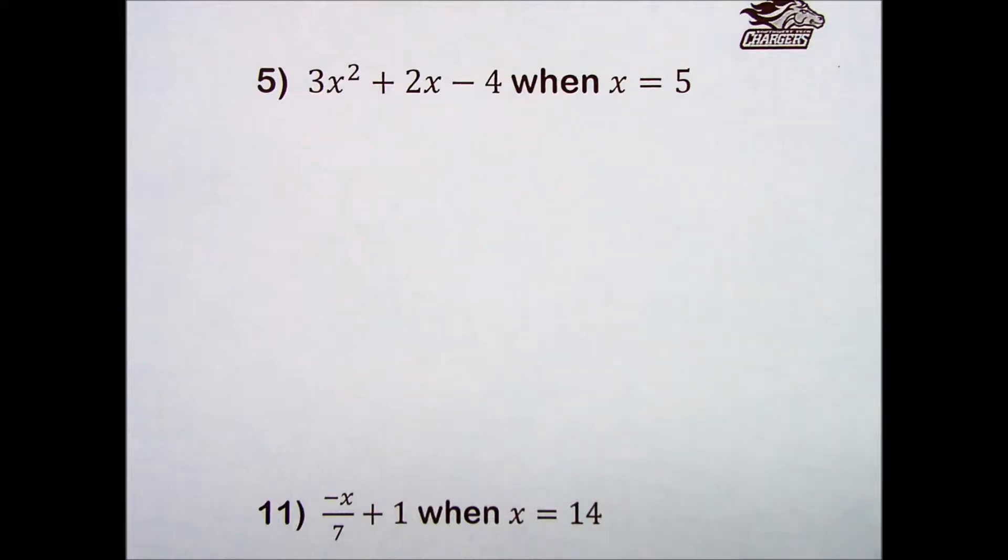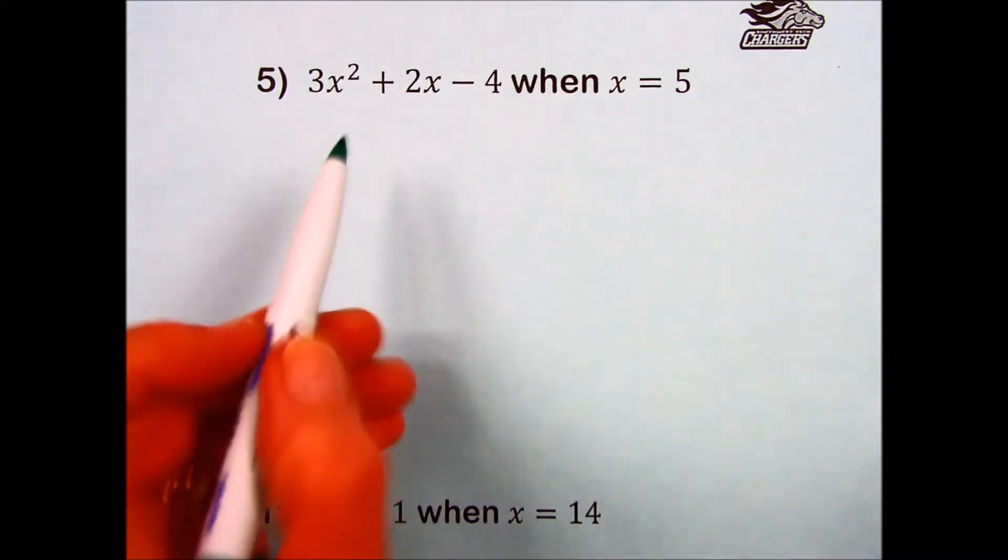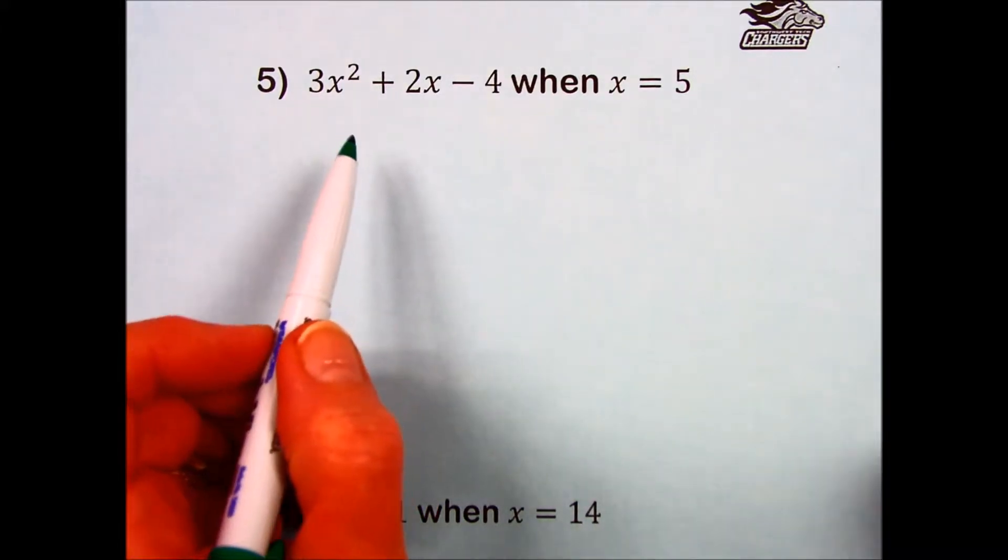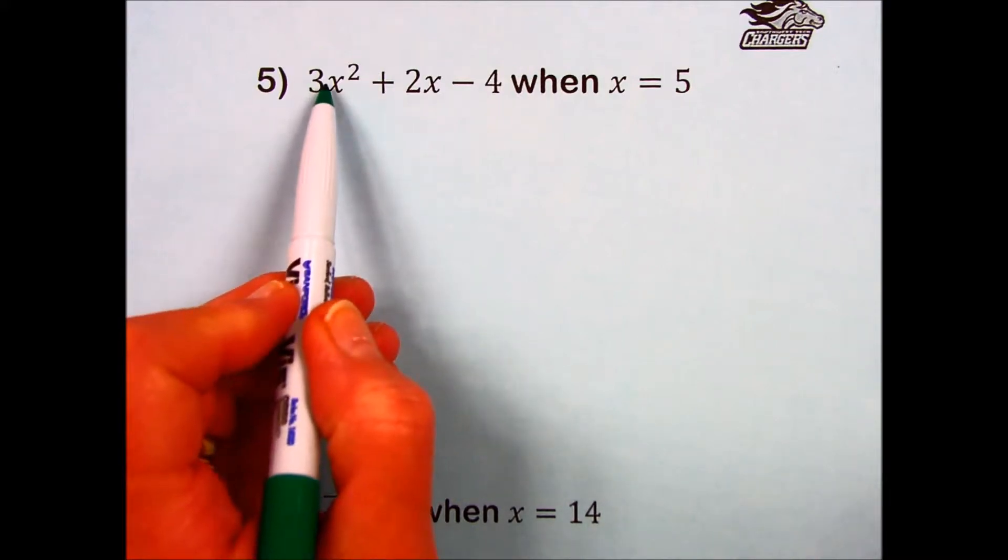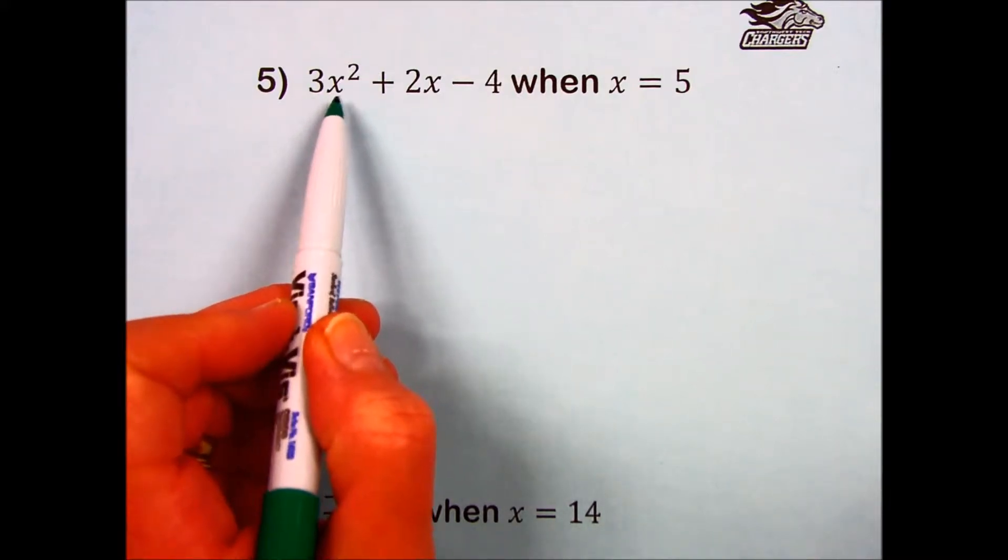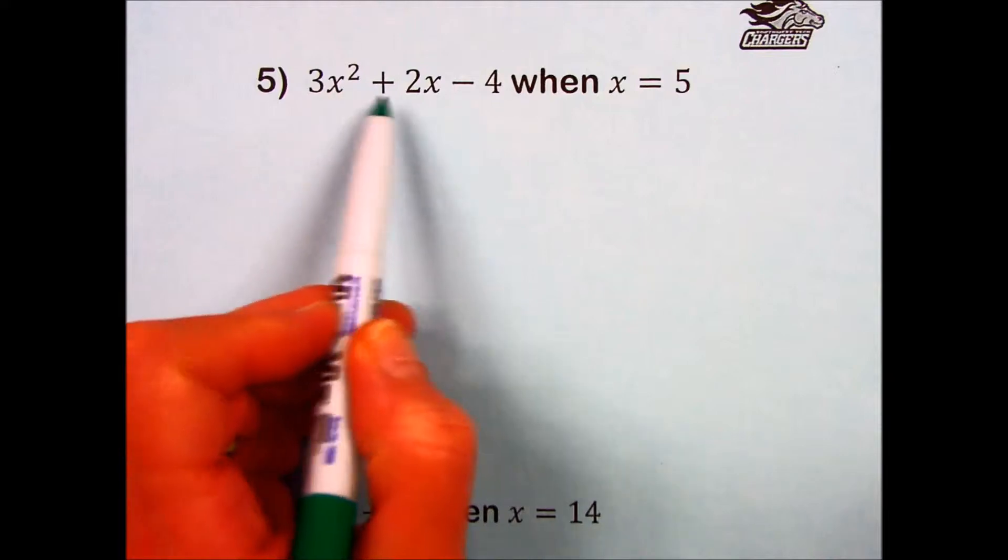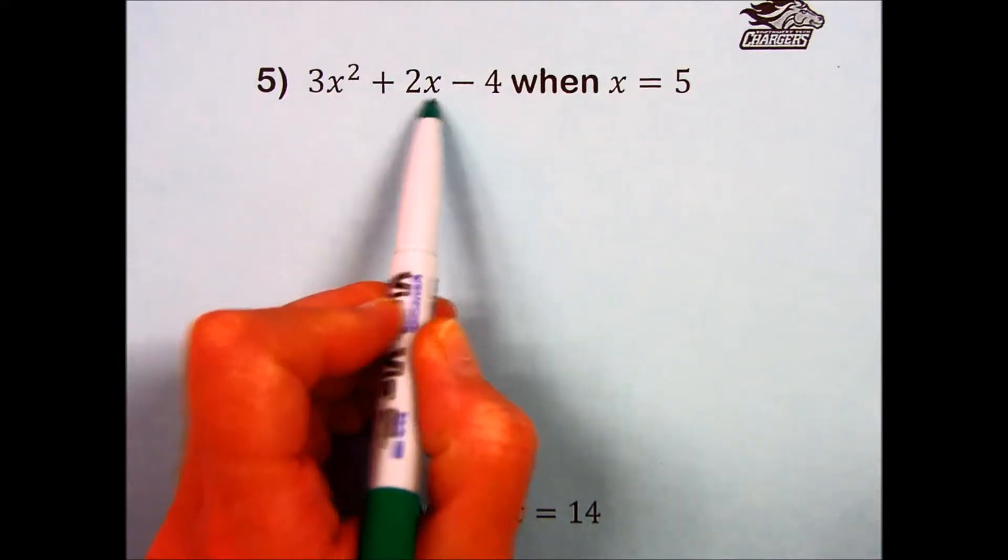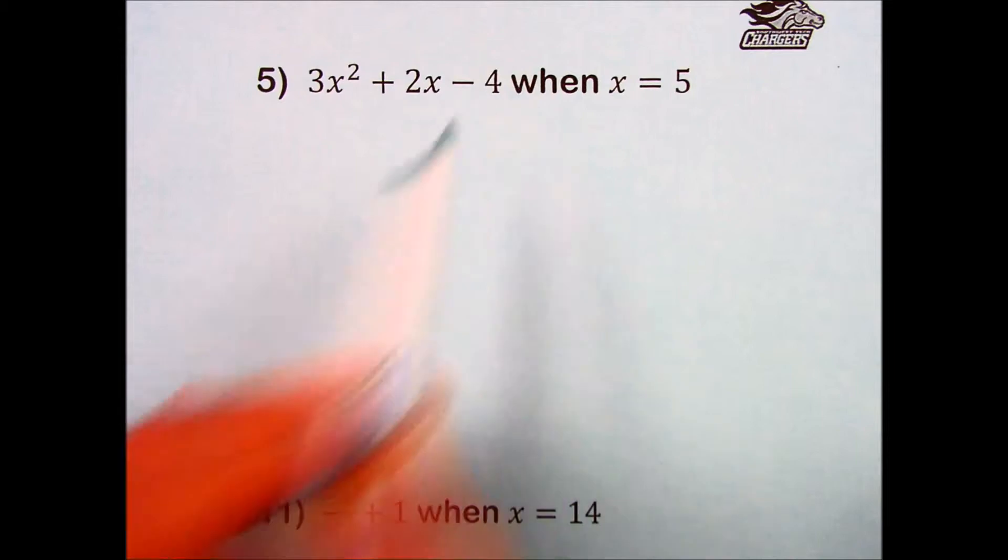Before I replace that variable though, I want to look at this expression and determine what my priority would be. I see an implied multiplication with the 3 next to the x, quantity squared, a power, an addition, another implied multiplication, and a subtraction.